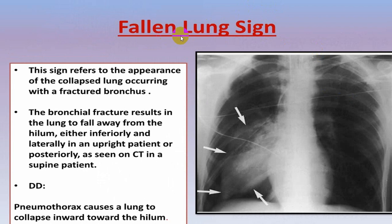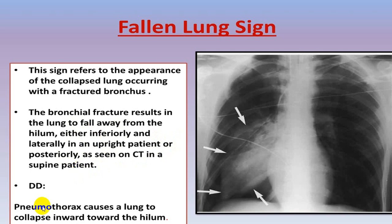The fallen lung sign: the appearance of a collapsed lung occurring with a fractured bronchus. Because of the bronchial fracture, the lung falls away from the hilum either inferiorly or laterally in an upright patient, or posteriorly in a supine patient on CT. This results in pneumothorax along with collapse — the entire lung collapses and, because of the bronchial fracture, appears as if it is falling. Hence the name fallen lung sign.